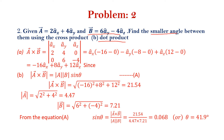First, we are going to find out the smaller angle using the cross product, then using the dot product. The cross product A cross B is computed using the matrix form: write ax, ay, az as unit vectors, then the coefficients for vector A are 2, 4, and 0, and for vector B are 0, 6, and minus 4.